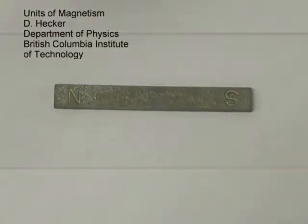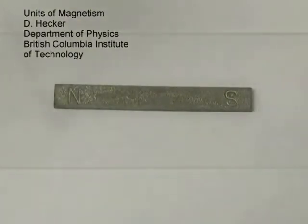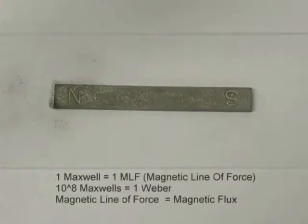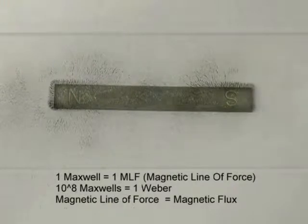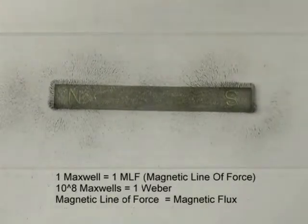We can visualize the magnetic lines of force or magnetic flux by sprinkling iron filings onto the plexiglass. An individual magnetic line of force is called a Maxwell. The magnetic field in the bar magnet is produced by the spin and velocity of the charged particles, the electrons.